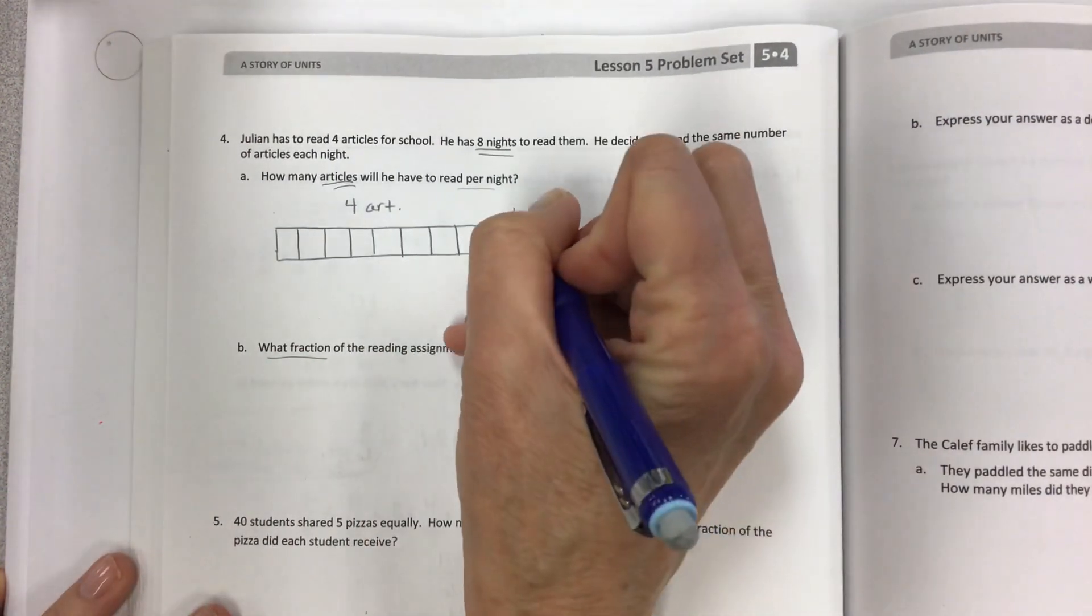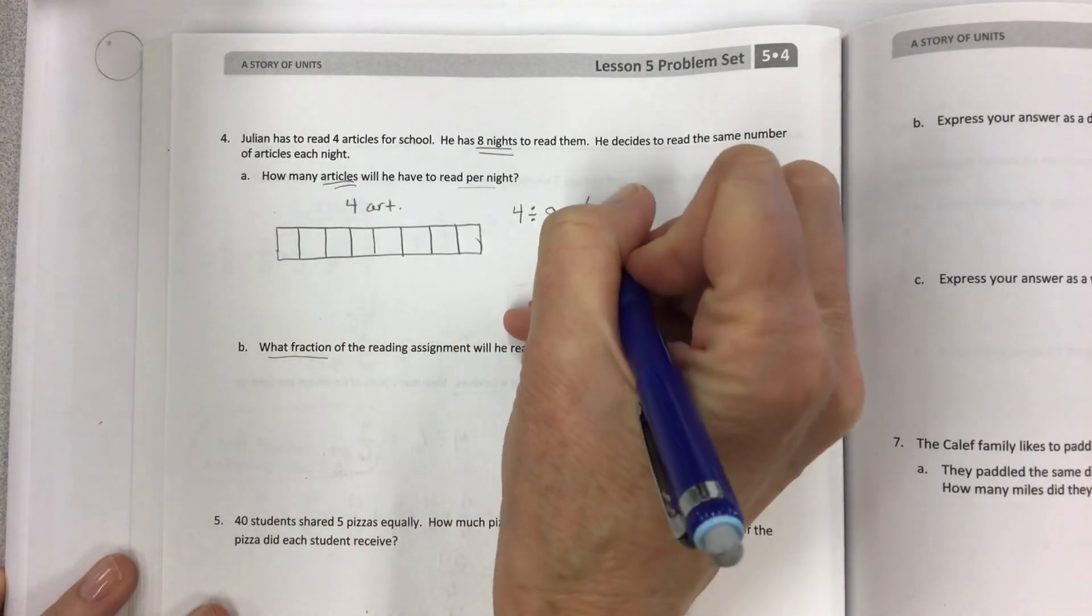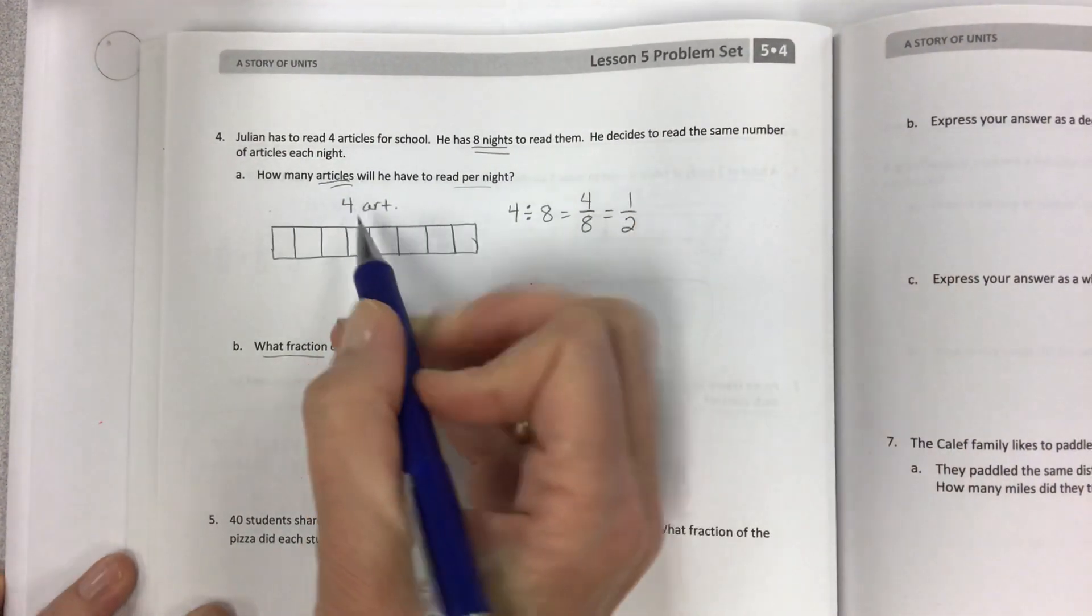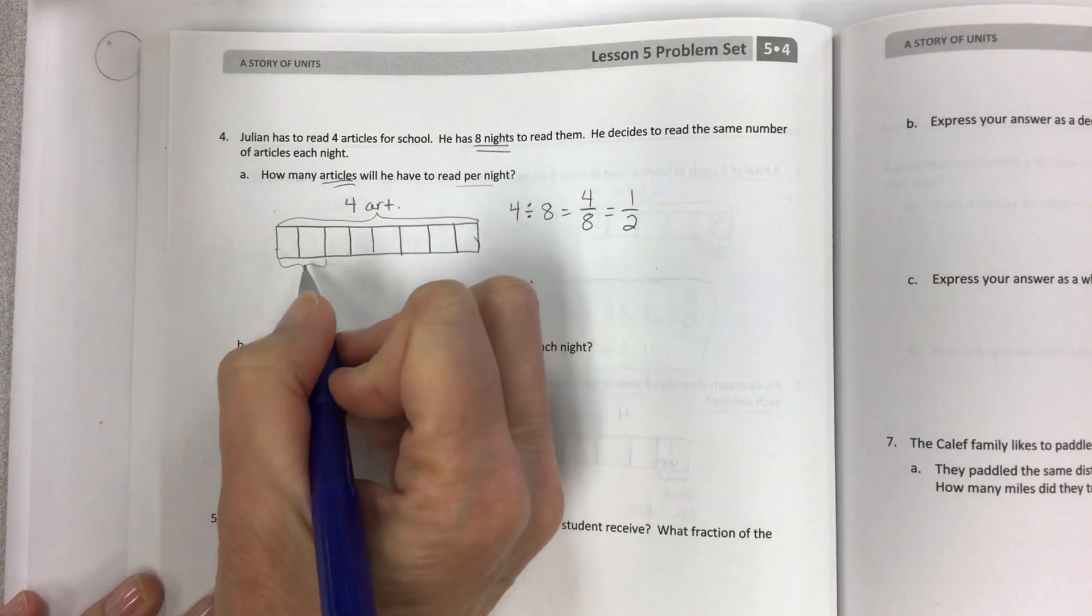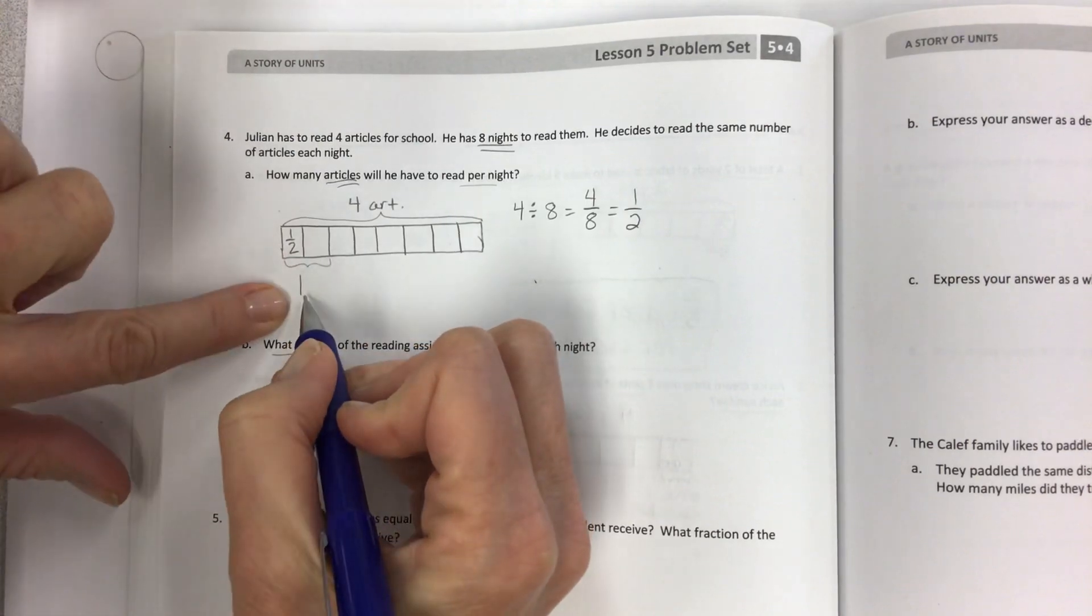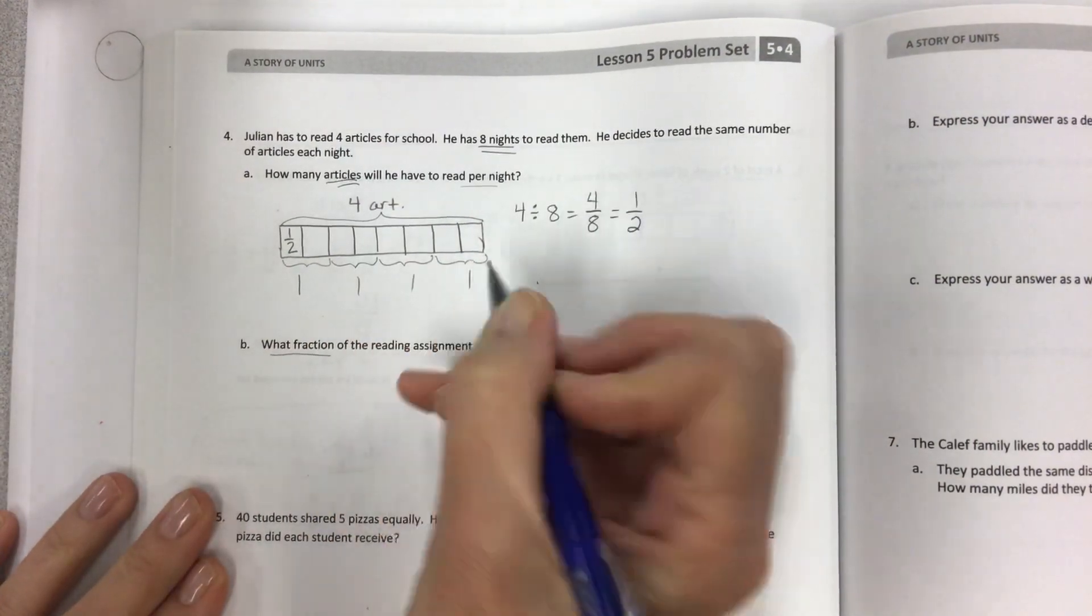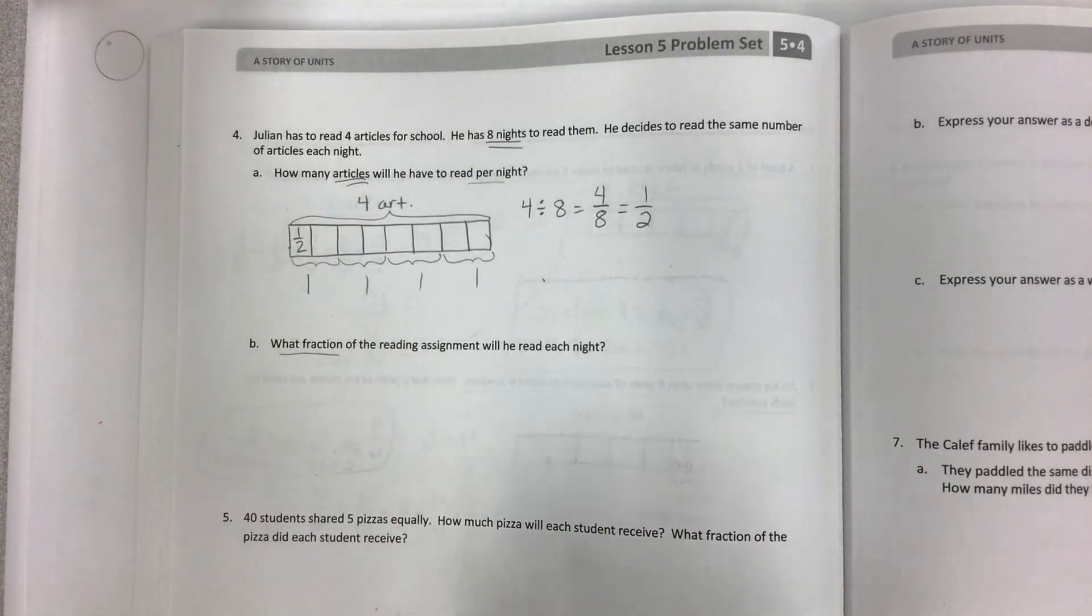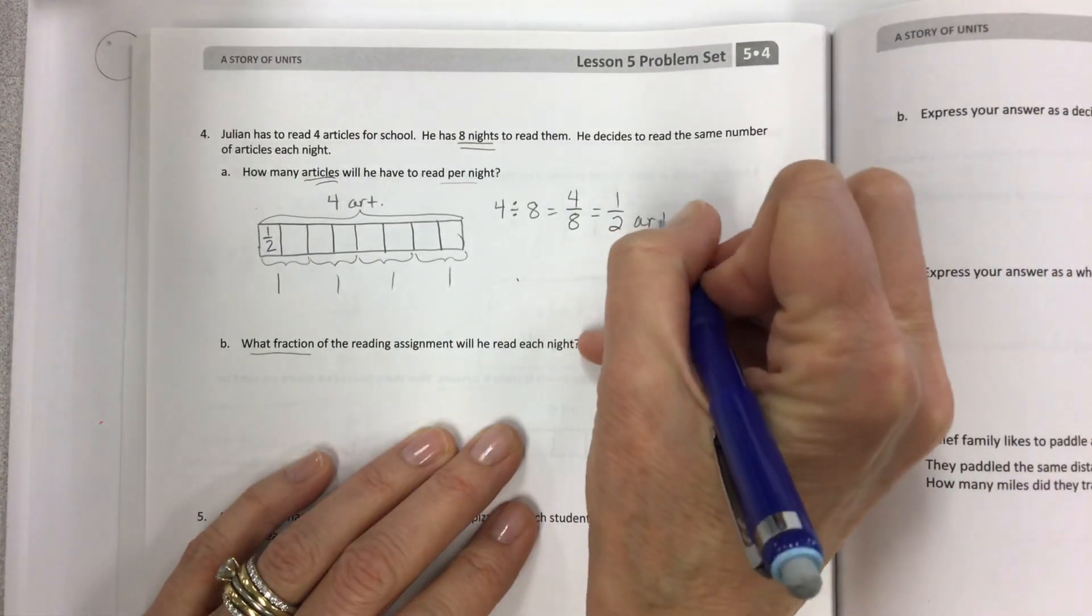So he's got four articles divided by the eight nights, which is 4 divided by 8, which is really half. And you probably were looking at this saying, well, if I have four articles and I only do half of an article each night, then each two halves would make one whole. And so then you can also start seeing how to put things together if you create a tape diagram that has the proper number of pieces. So be really careful when you create them.